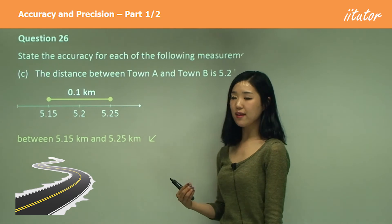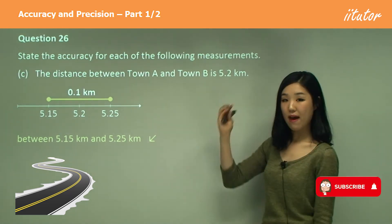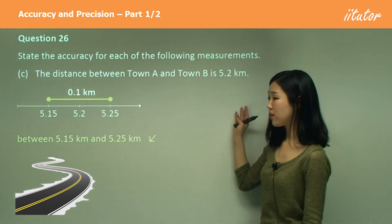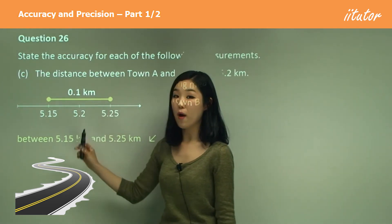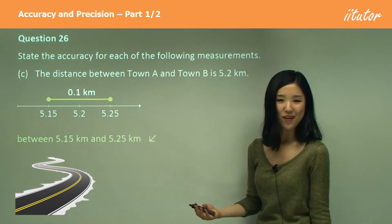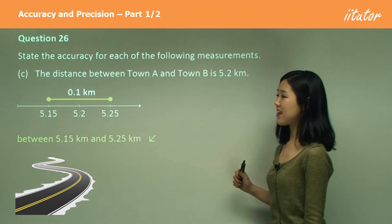So you've got to really understand what value the original value, original number, is rounded to. If it's 5.2, we're going to use 0.1. If it was say 5.25, we should use 0.01. So I'll show you the next question.